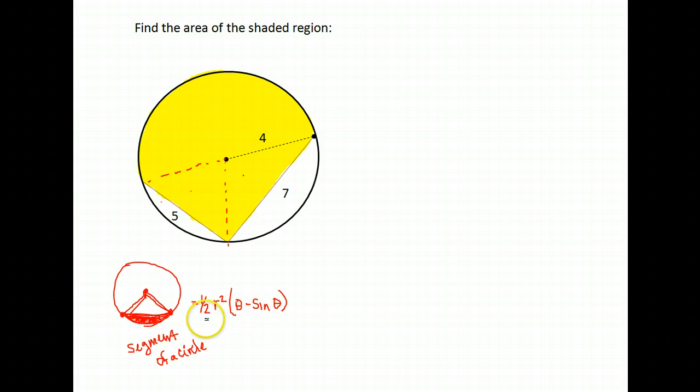So my plan here is to find the area of the entire circle, and then find the area of this segment created by the chord length 5, find the area of this segment created by the chord length 7, and subtract these from the full area of the circle. And that will give me my area. Like I said, there are other correct ways to do this; this is just one way that I chose.